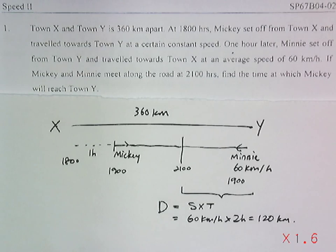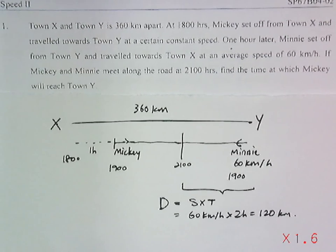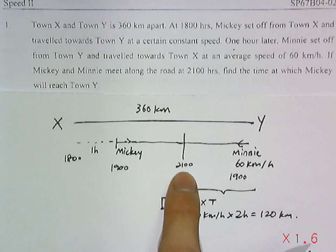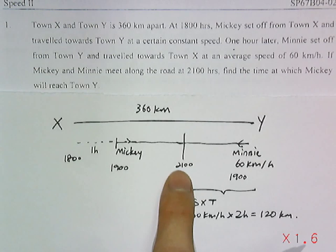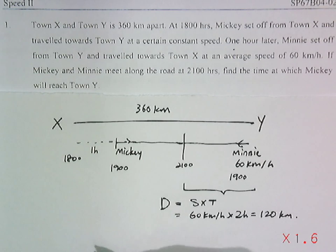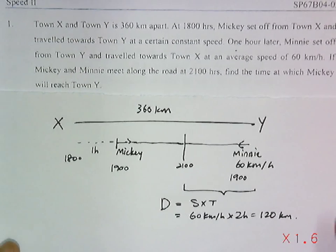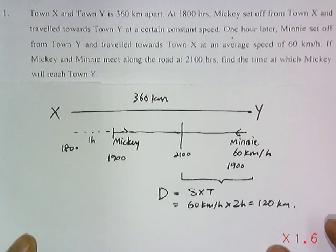We check again for Mickey. Looking again for Mickey's journey, from 1800 hours to 2100 hours, that will take him 3 hours.